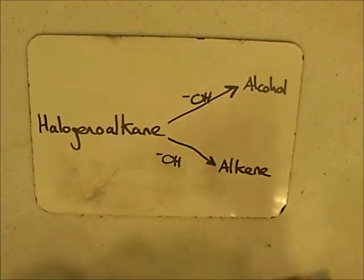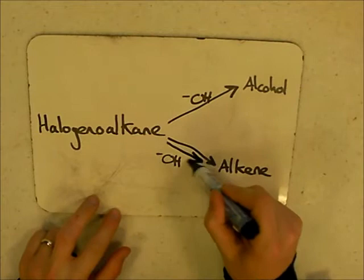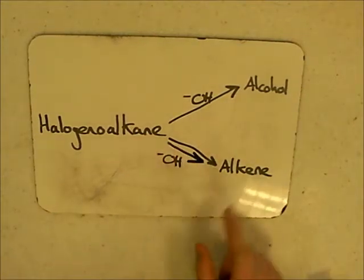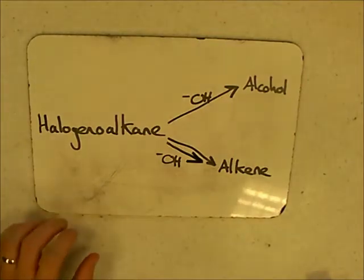What we're going to concentrate on is this reaction here. So we're going to be looking at how a haloalkane with OH- can form an alkene, and it's a type of elimination reaction.